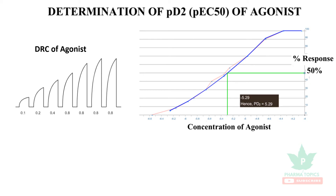From the graph, the 50 percent response will be interpolated to find out the concentration of the agonist. This plot gives the PD2 value, which may also be called the pEC50 value of the agonist.